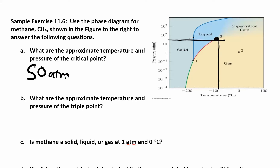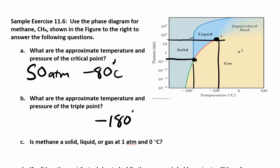Next: what are the approximate temperature and pressure of the triple point? The triple point is point number one. Draw a line over and drop it down. The temperature is about negative 180 degrees Celsius. The pressure is about 0.1 ATM — that's 10 to the negative one. Next question: is methane a solid, liquid, or gas at 1 ATM and 0 degrees Celsius? Find 1 ATM and draw a line all the way over to zero degrees. That puts you in the gas region. That's a gas.